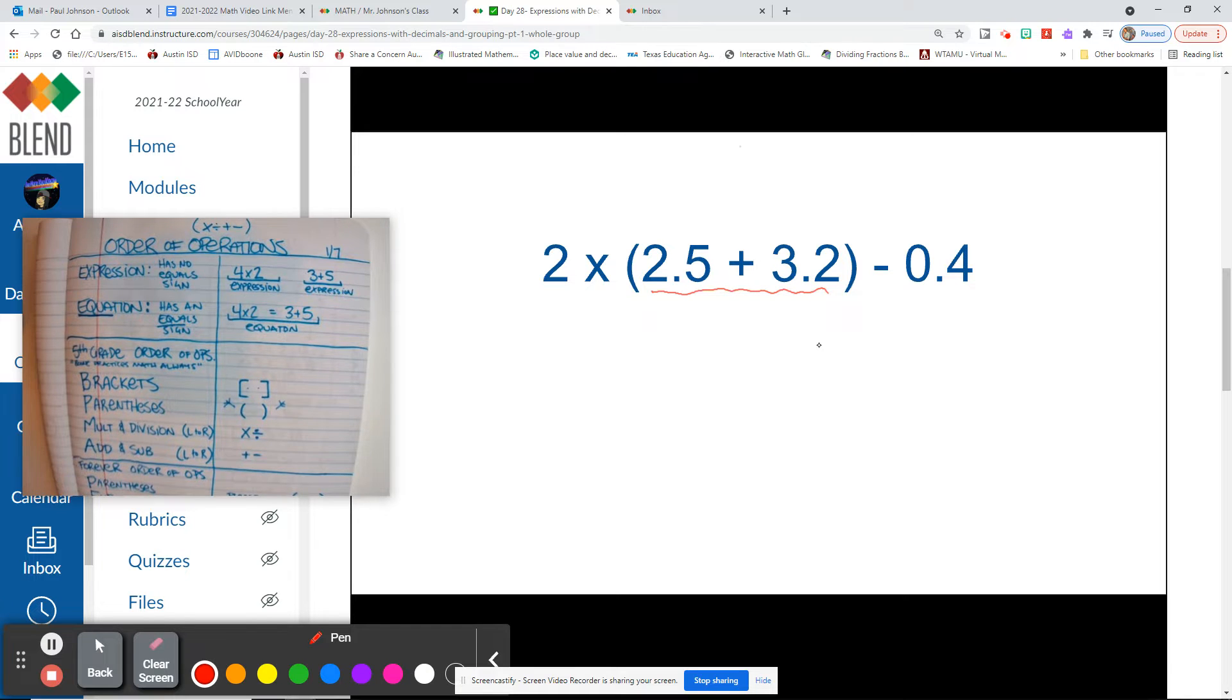Alright, so 2 and 5 tenths plus 3 and 2 tenths. I'm just going to do the math to this side, just to make sure that I don't make any mistakes. So there's 5 plus 2 is 7, 2 plus 3 is 5, drop that decimal point on the other side. So we have 5 and 7 tenths. I can make a little dashed line knowing that I did that.